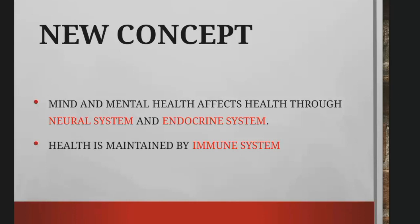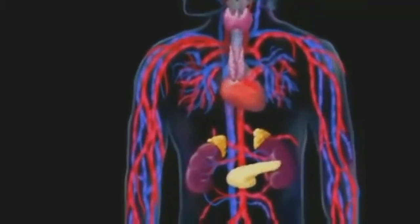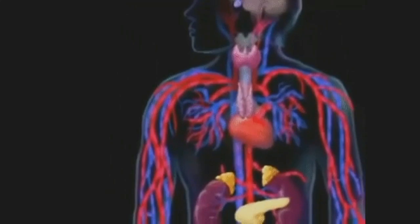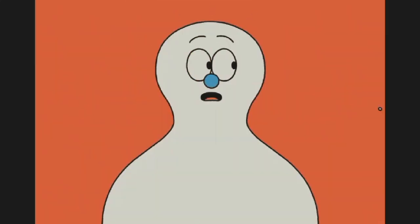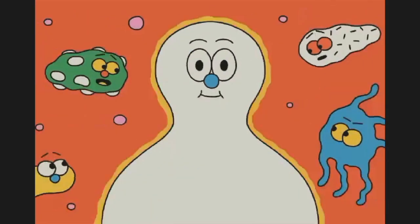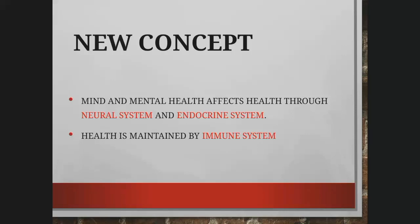We know our health is influenced by our mind and mental condition, which is controlled by the neural system and endocrine system. The neural system includes our brain and all the neurons, and the endocrine system includes all the endocrine glands such as the pituitary, pancreas, and adrenal gland, along with all our hormones. Our health is also maintained by the immune system, which provides us immunity — our natural ability to resist diseases. In a nutshell, the new concept says mind and mental health affect health through the neural and endocrine systems, and health is well maintained by the immune system.